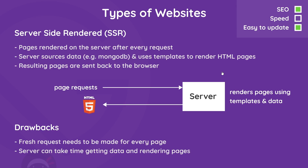Another type of website is a server-side rendered website, or SSR for short, where our HTML pages are built on the fly on the server after every page request. The server gets data for that page from a database, pumps it into a template file, and sends back the resulting HTML to the browser. Traditionally this is how PHP or Node and Express websites work using a templating system like EJS. This means the site is search engine optimized because we get back a content-rich HTML page, and updating something like a header is easy because we're using a templating system on the server.